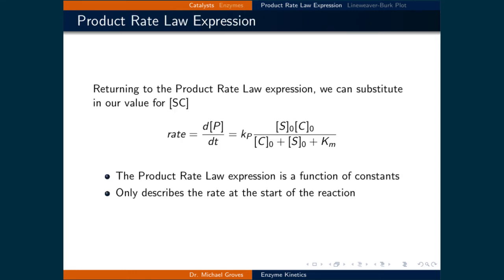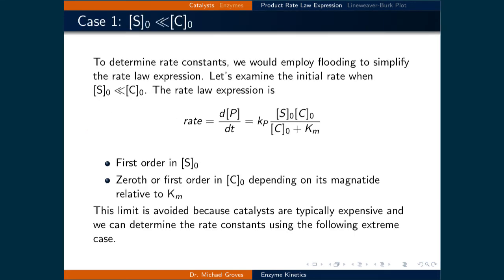Returning to the product rate law expression, we can now substitute in our value for [SC] to get: d[P]/dt equals kp times [S]₀[C]₀, all divided by ([C]₀ plus [S]₀ plus Km). This product rate law expression is a function of only constants and describes the rate of the reaction at the start of the process. To determine the rate constants, we would employ flooding to simplify this rate law expression.